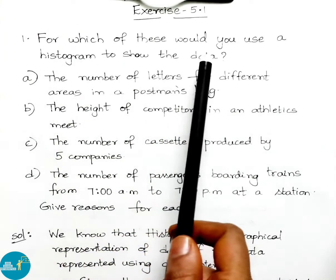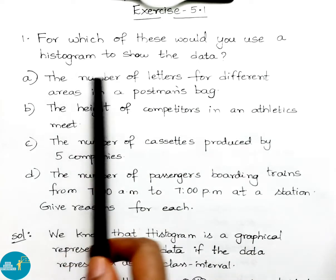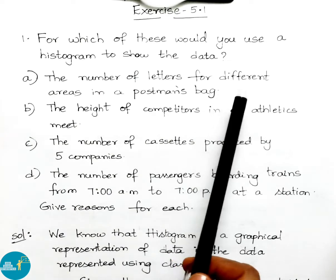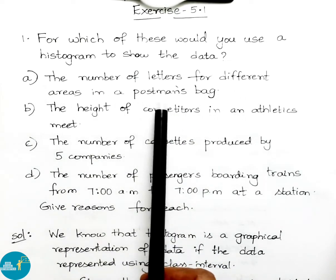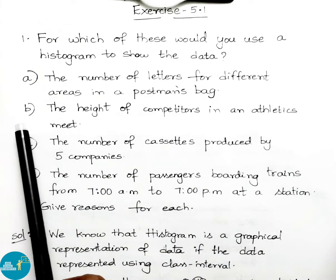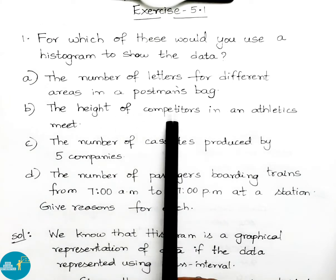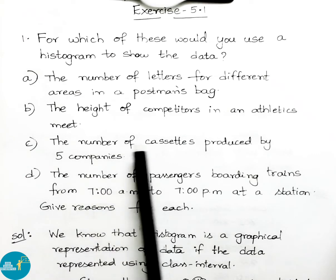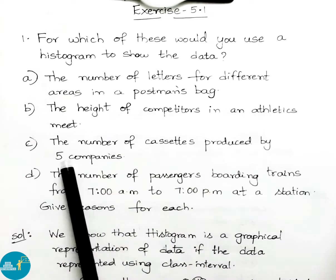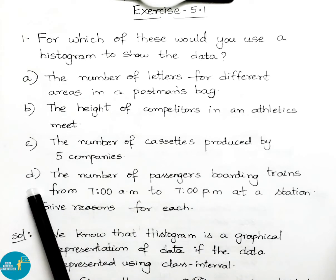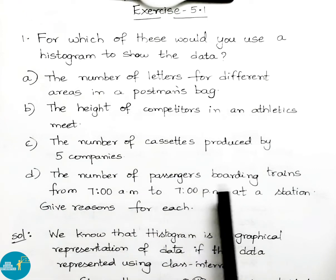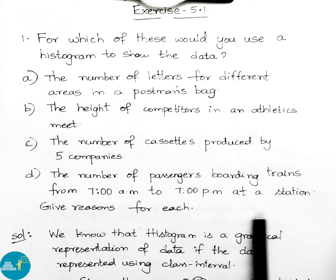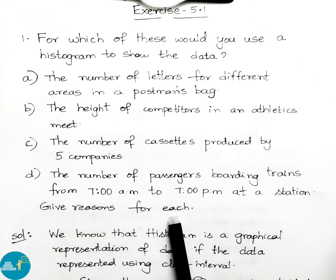For which of these would you use a histogram to show the data? Option A: the number of letters for different areas in a postman's bag. Option B: the height of competitors in an athletics meet. Option C: the number of cassettes produced by 5 companies. Option D: the number of passengers boarding trains from 7 a.m. to 7 p.m. at a station. Give reasons for each.